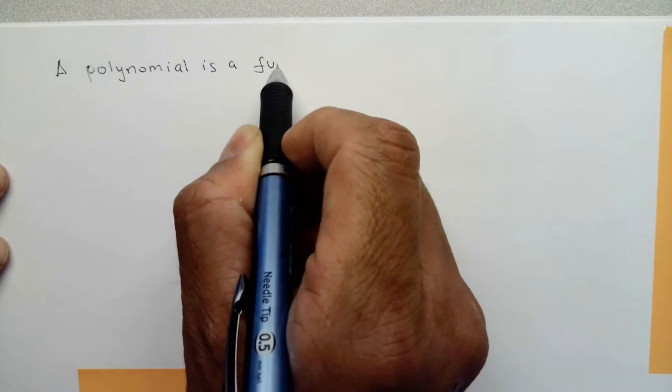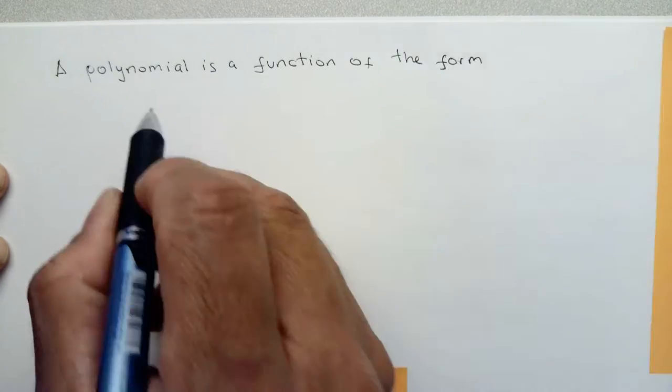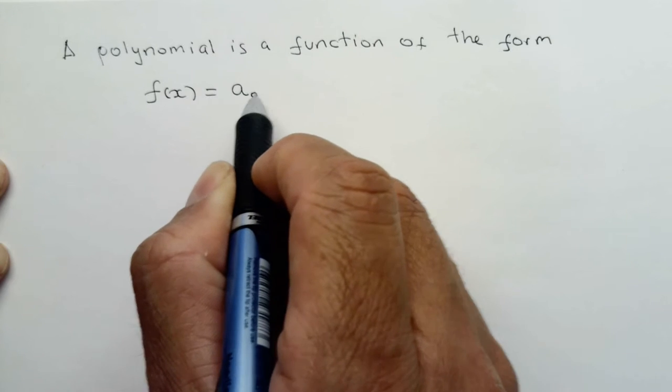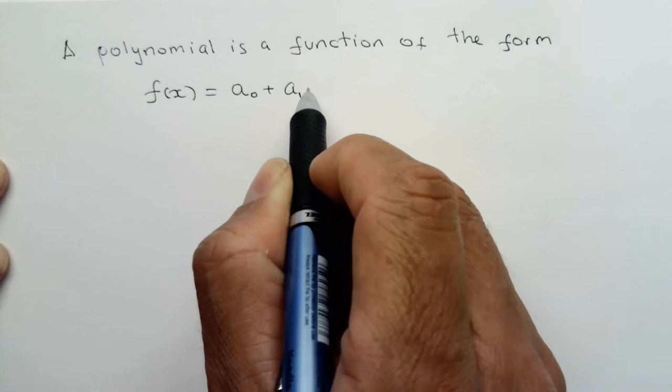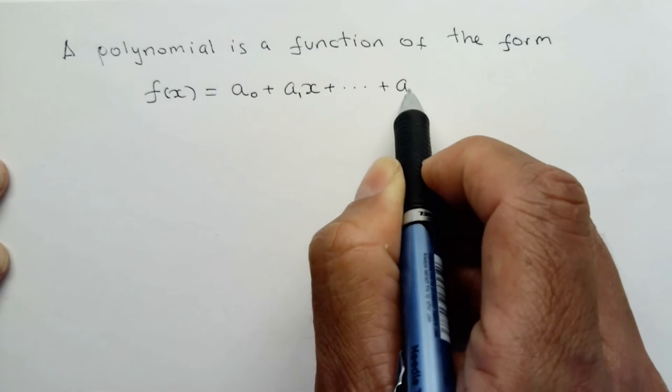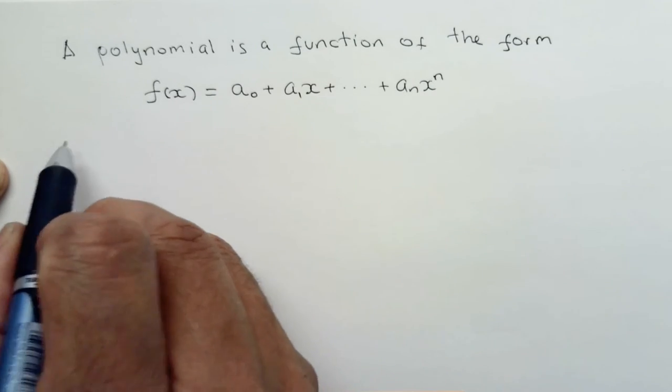A polynomial is a function of the form f of x equals a sub 0 plus a sub 1 times x, continuing to a sub n times x to the n.